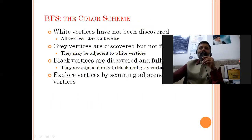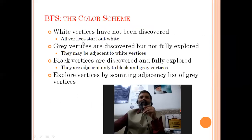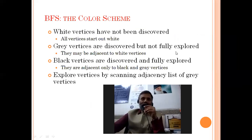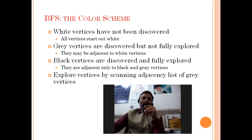We use a coloring scheme just like in DFS. White vertices mean nodes have not been covered. Gray color shows that vertices are discovered but not fully explored, meaning they may have some adjacent nodes with white color. The third color, black, shows that a node has been discovered and fully explored, meaning nothing is pending for that node. The coloring scheme is the same as we discussed in DFS.